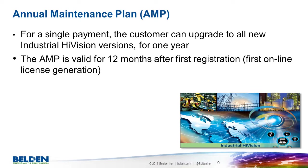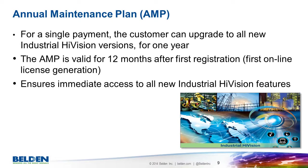For example, if you buy the AMP in March but the next version is not released until September and you do not install it until November, the 12-month clock starts in November. Although new features are usually customer-driven, we give high priority to features beneficial to the greatest number of customers. So it's really worthwhile to upgrade to the latest versions — there'll always be something to make your network management life easier. It makes sense to include the AMP in your budget plans right from the start, so you'll know the total cost of ownership for the lifetime of your network.